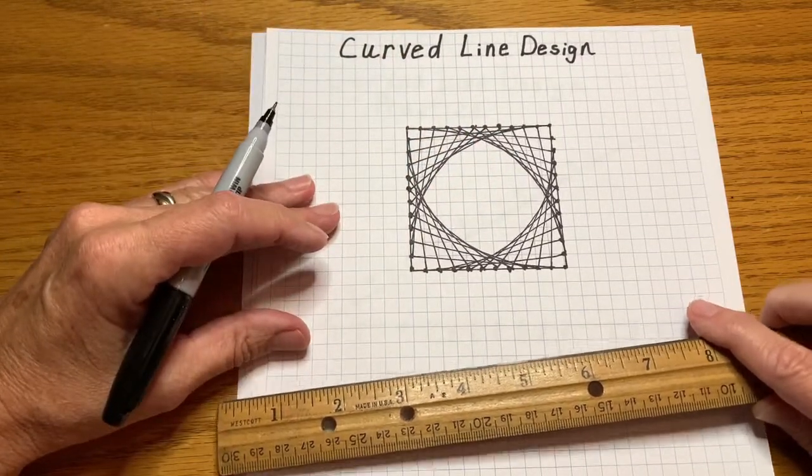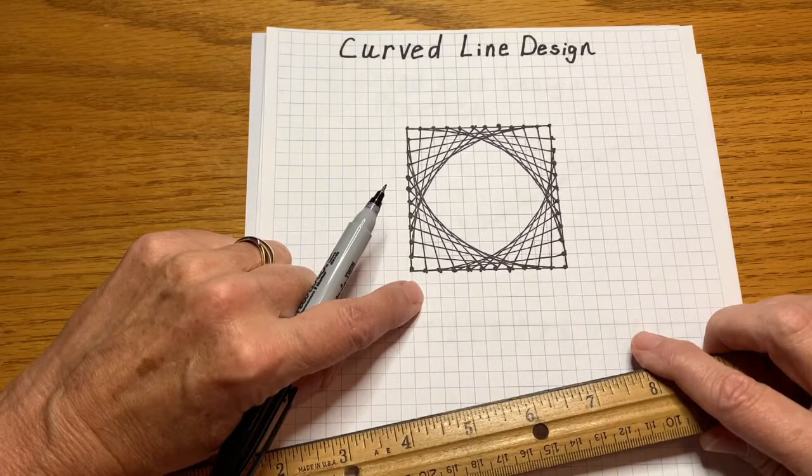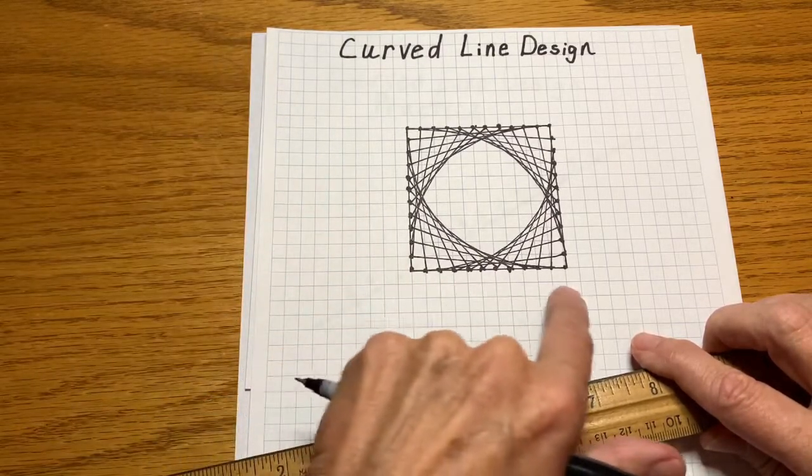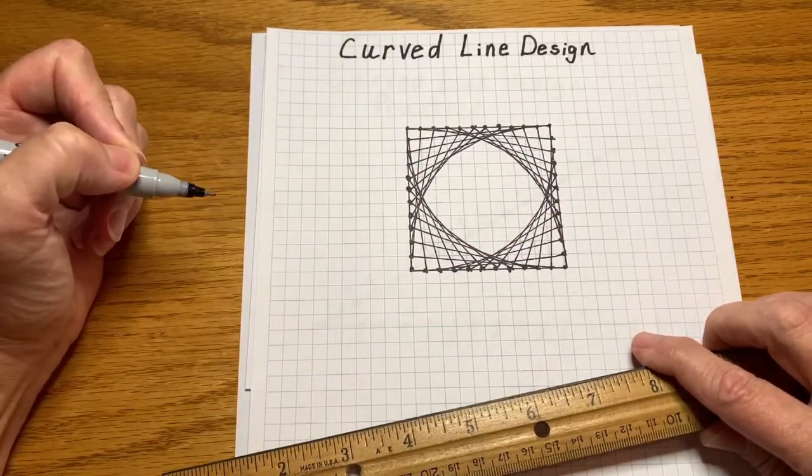I used graph paper in this example and that way the spacing was already done for me. And you need to have the same number of dots on all sides that you're connecting because everybody needs a partner to match up with.